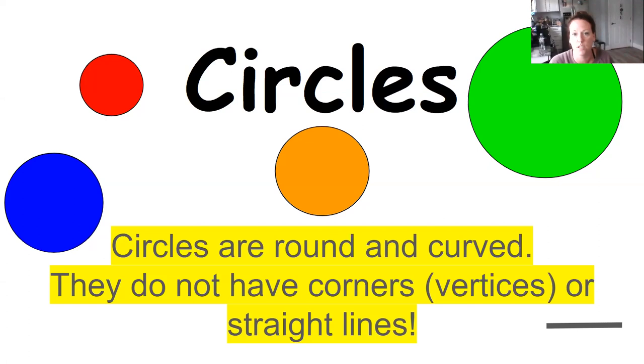Circles do not have any corners or any vertices, and they also don't have straight lines. So circles are round and curved. Go ahead and say circles are round and curved. Good job.